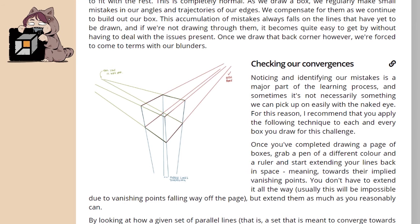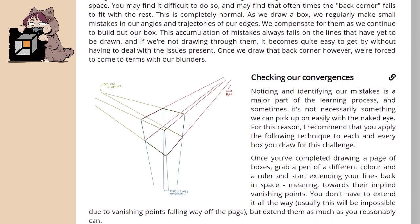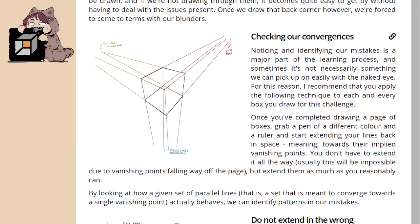So after we've finished the box, the next part is to check our convergences. Noticing and identifying our mistakes is a major part of the learning process, and sometimes it's not necessarily something we can pick up on easily with the naked eye. For this reason, I recommend that you apply the following technique to each and every box you draw for this challenge. Once you've completed drawing a page of boxes, grab a pen of a different color and a ruler and start extending your lines back in space, meaning towards their implied vanishing points. You don't have to extend it all the way - usually this will be impossible due to vanishing points falling way off the page - but extend them as much as you reasonably can.